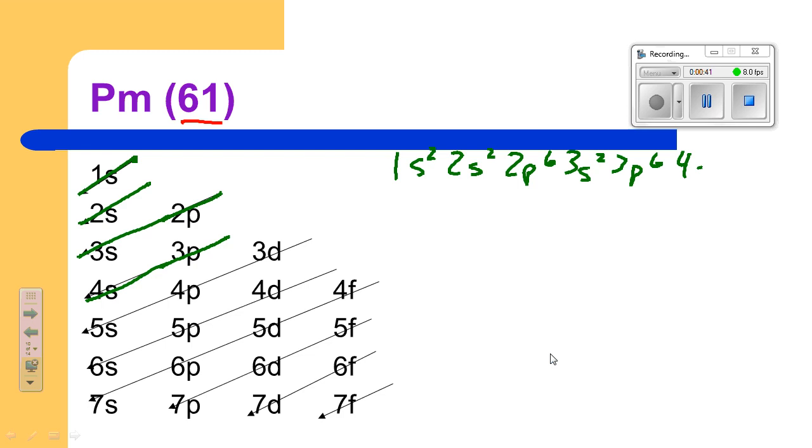Now we've got a ways to go here because we've got to get 61 electrons so we know we're going to go for a while here. 3d, 10, on through 4p, 6, and to 5s.